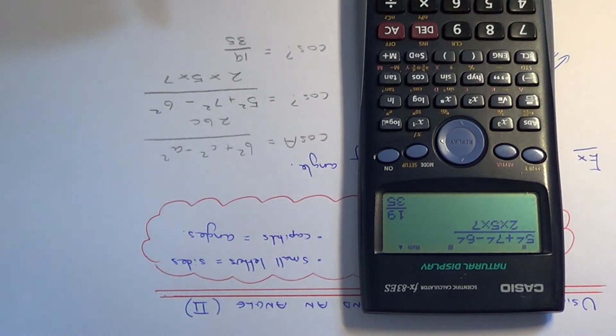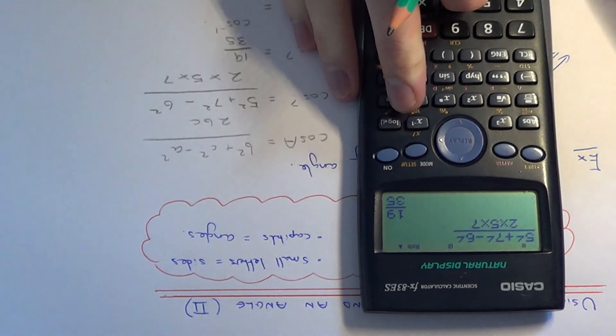So we just need to now convert this fraction into an angle. So we do the opposite to cos, which is cos minus 1. So this will give us our final answer.